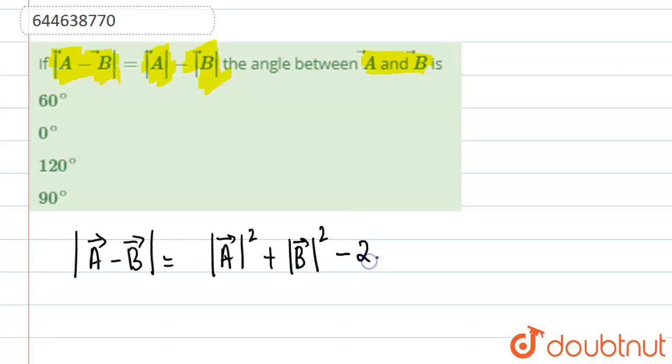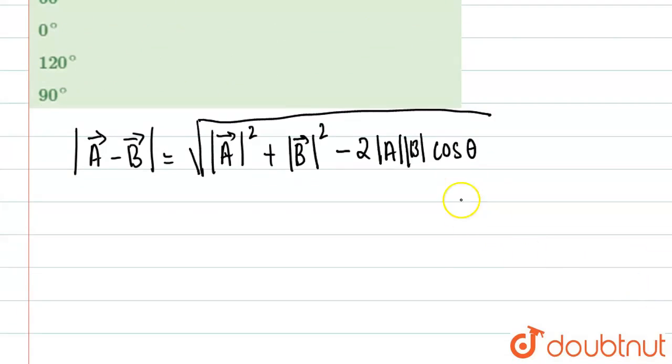So if you see properly, now if you square both sides and if you see in the question, it's given |A⃗ - B⃗| must be equal to |A⃗| magnitude minus |B⃗| magnitude.